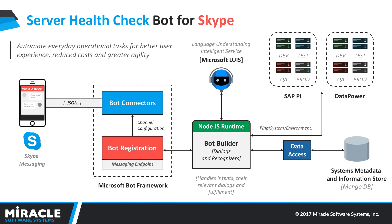The user would come in and every time they send a message, it would be sent to the bot framework where the bot connectors are configured for their channel. That would in turn be sent back to our Node.js runtime, where the callback URL is configured within our bot registration. The Node.js runtime then processes the request and uses any backend systems it needs, such as LUIS. It also pings the environments whenever that request comes through, and it uses a system's metadata information store — in this case MongoDB — to retrieve the system-to-URL mapping.